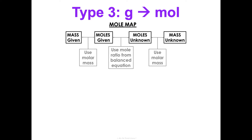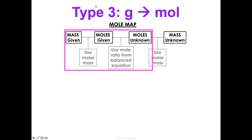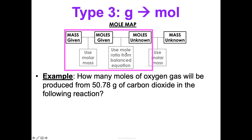Okay, now let's say we're going from grams to moles — taking it back a step. I give you the mass, you want to know the moles of something. So it's going to be two steps: mass to moles, then moles to moles. We're going to need a molar mass and we're going to need a mole ratio.